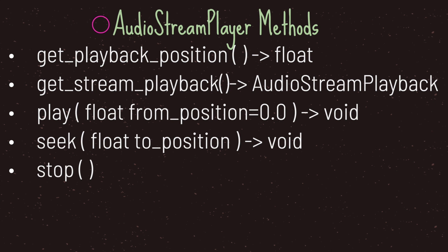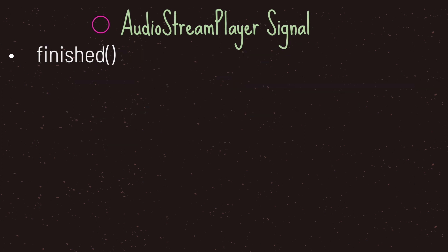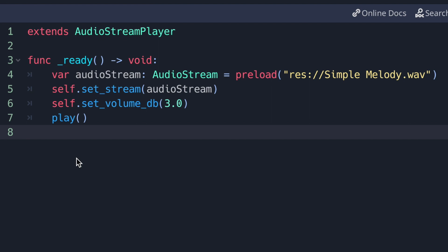The difference between play and seek is that the play method starts playing music for the user from the given position, whereas seek only moves the playback position without actually playing the music. The last method is stop, which stops your audio file from playing. The AudioStreamPlayer also comes with one signal called finished, which is emitted when your audio file finishes playing. We will not go over signals in this episode.